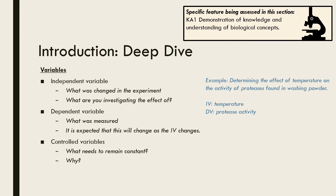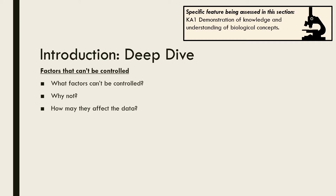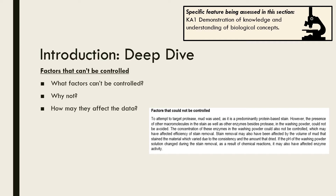Returning to our example, some of the other factors that may influence protease activity and therefore need to remain constant include pH, the concentration of both substrate and enzyme, the volume of detergent solution, and time the reaction is allowed to proceed for. As well as controlled variables, there will be other factors that may affect the data that are unable to be controlled. These also need to be considered in the introduction, including explaining why they can't be controlled and how they may affect the data. You don't need to go into a lot of detail — remember, you only have 1500 words — but you need to demonstrate an awareness of factors that can't be controlled and their effect on the data.